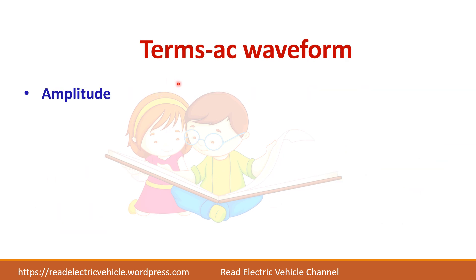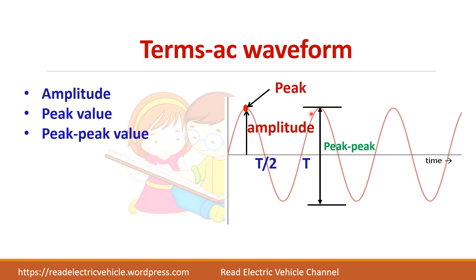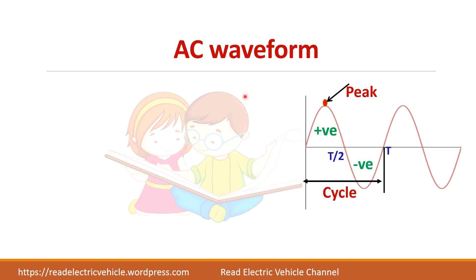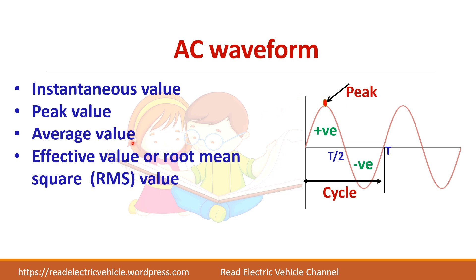There are different terms used to represent the AC waveform: amplitude, peak value, and peak-to-peak value. For a sinusoidal waveform, the amplitude is almost the same as the peak value. The peak value is the highest value of the sine waveform. The peak-to-peak value is measured from the top to the bottom of the waveform. There are also other factors such as instantaneous value, average value, and effective or root mean square (RMS) value.